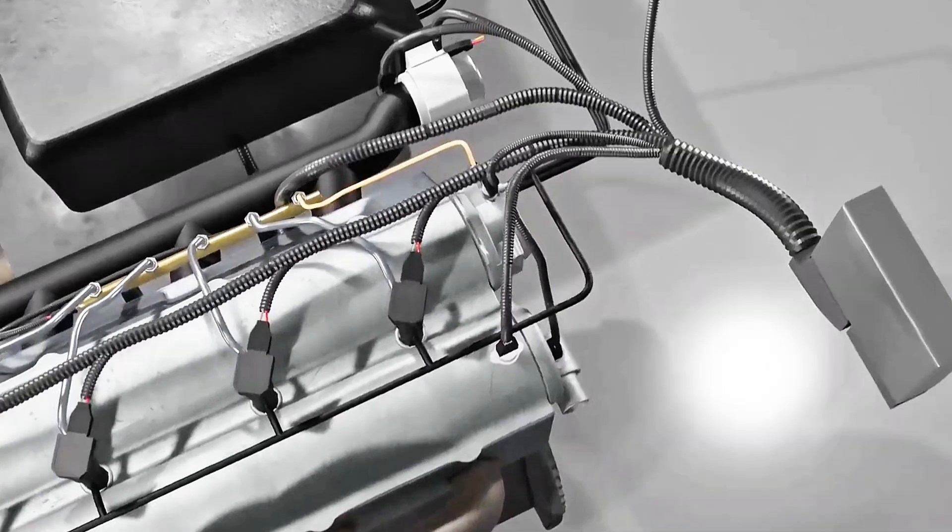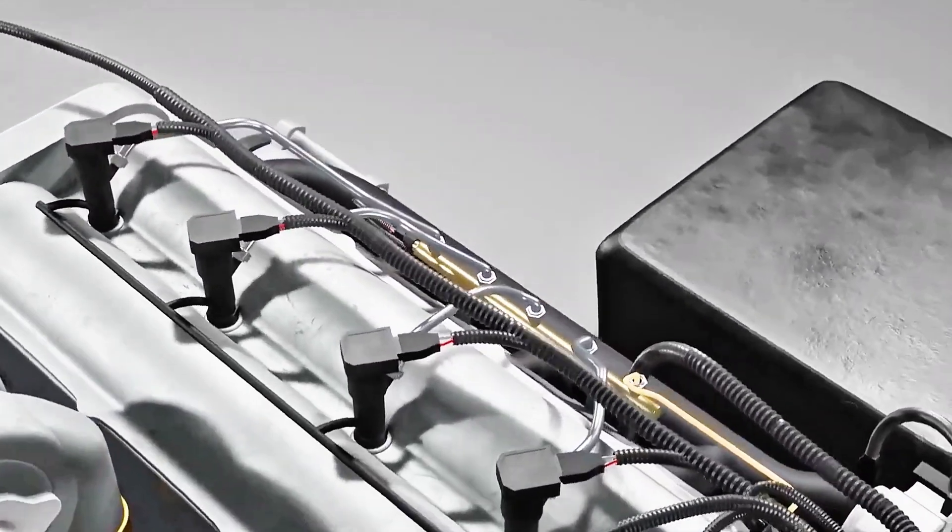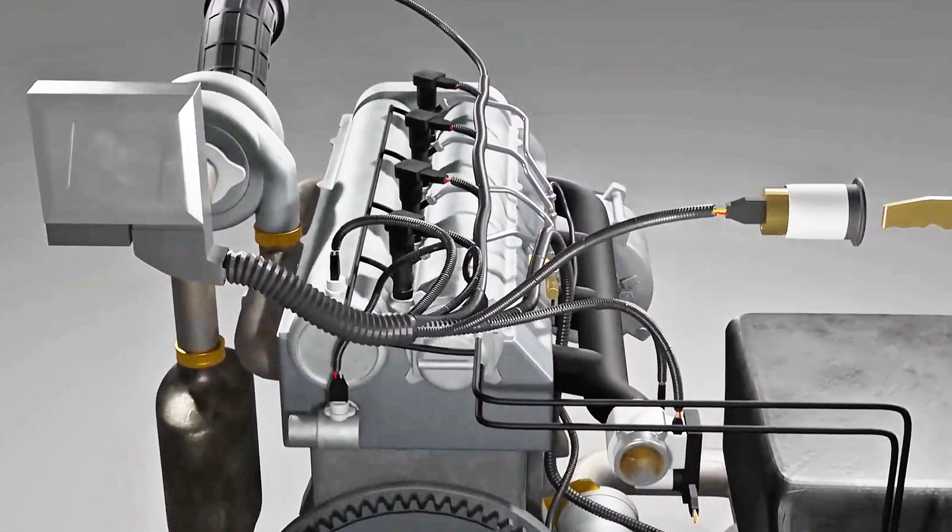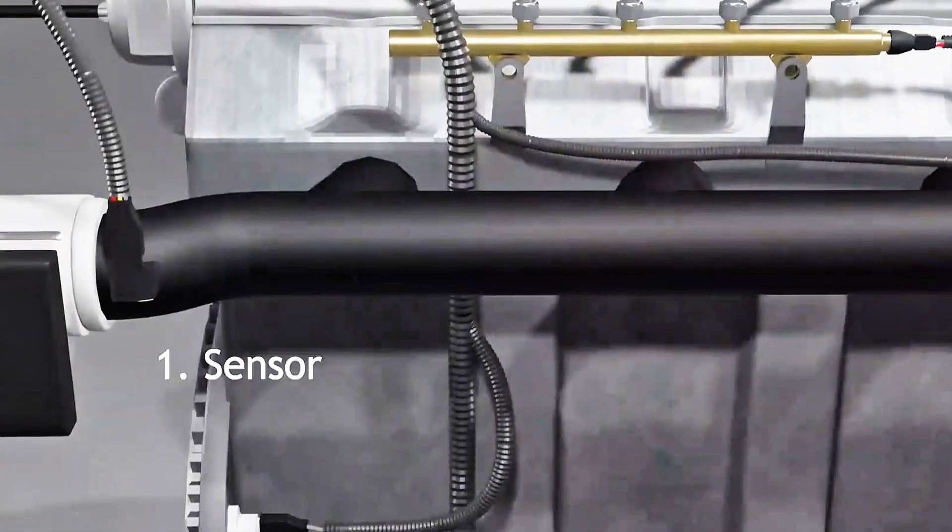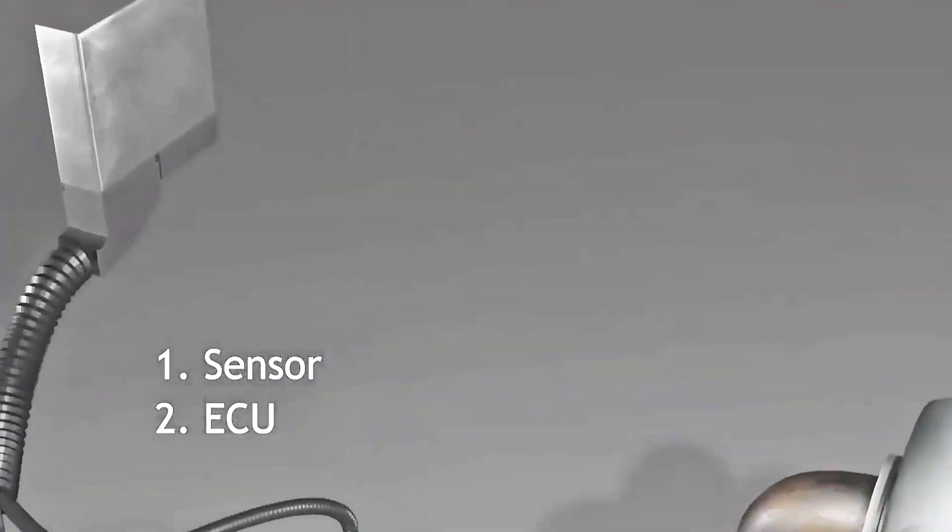Like other electronic systems in engines, the common rail system also consists of three groups of components, namely sensors, ECU, and actuators.